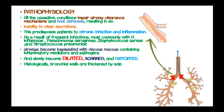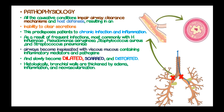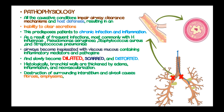Histologically, bronchial walls are thickened by edema, inflammation, and neovascularization. Destruction of the surrounding interstitium and alveoli causes fibrosis, emphysema, or both.